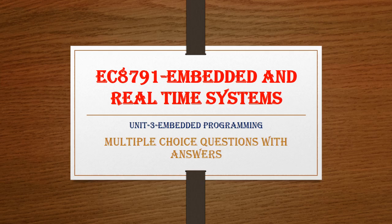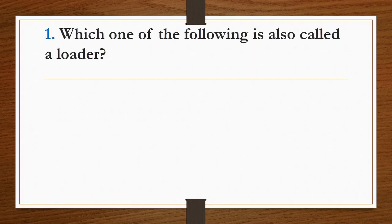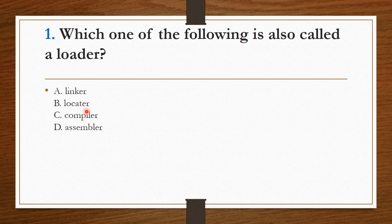Hello everyone, welcome to my channel. In this video we are going to see some important multiple choice questions in Unit 3 of Embedded and Real-Time Systems. First question: which one of the following is also called a loader? Four options are given: linker, locator, compiler, and assembler. The answer is option A, linker.